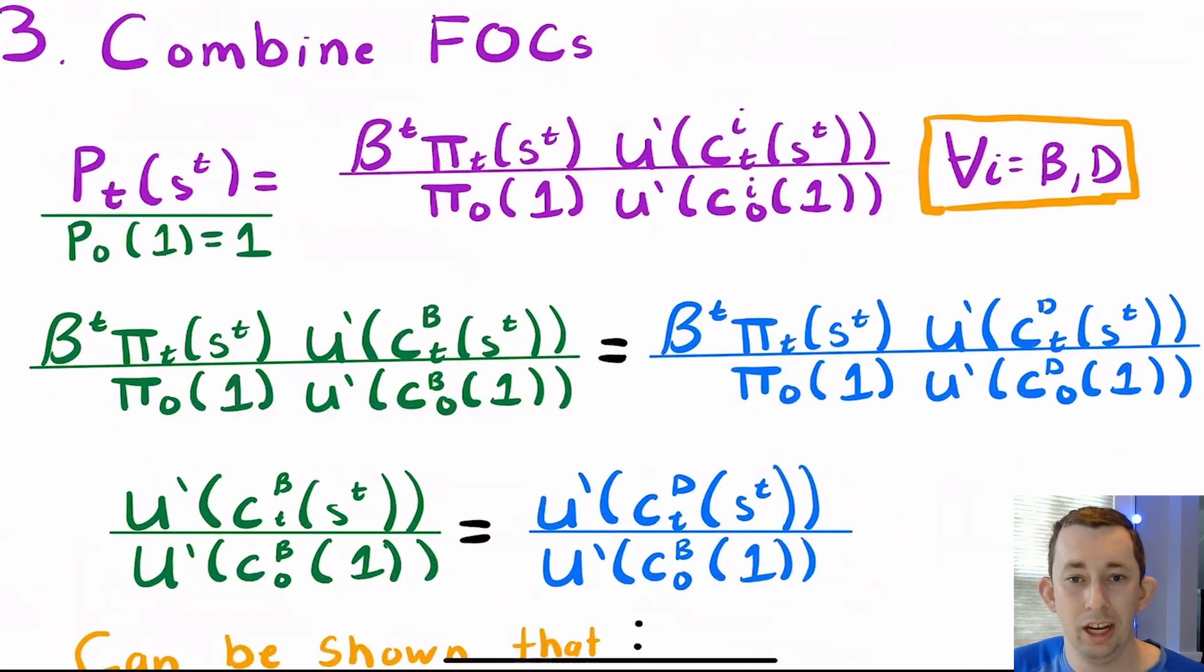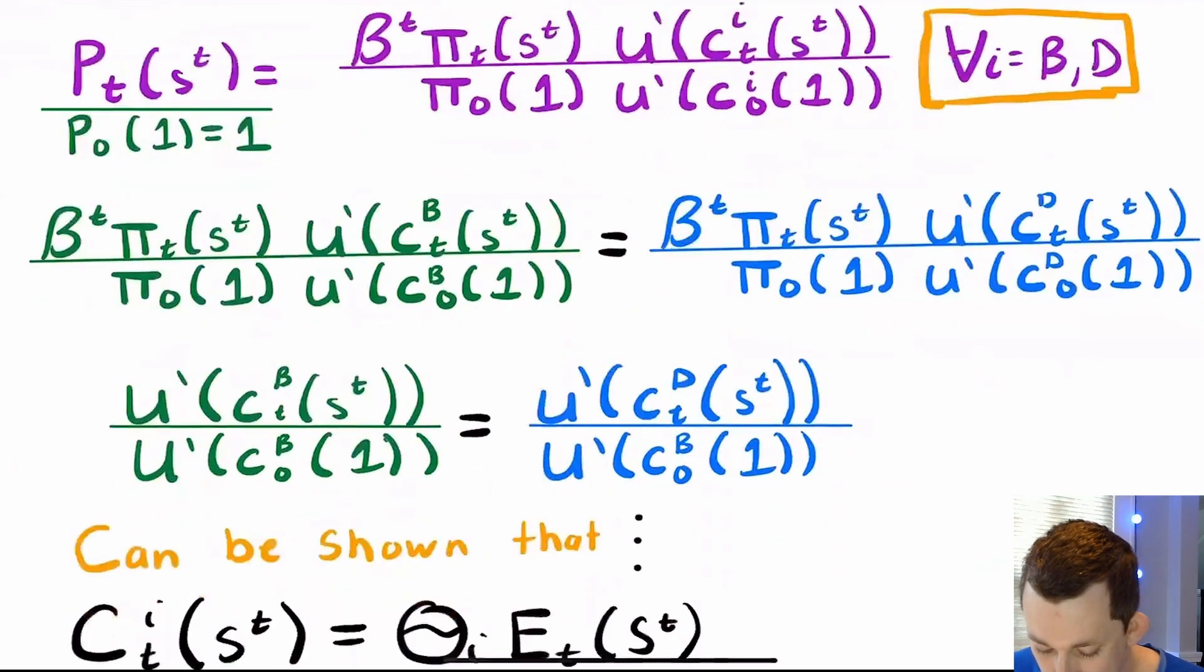Now, very similarly to how we've solved other Arrow-Debreu equilibriums, we're just going to combine our FOCs and see what happens. So again, this is really a price ratio, but we've normalized the p_0 of one to be one. So this just sort of drops out. It's not really there. Just combine those first order conditions. Notice that this holds for Bill and Dave. I know that Bill's Euler equation is equal to this guy. That means that Dave's Euler equation is also equal to that same price_t of event history s superscript t. So I can set them equal to each other and solve.